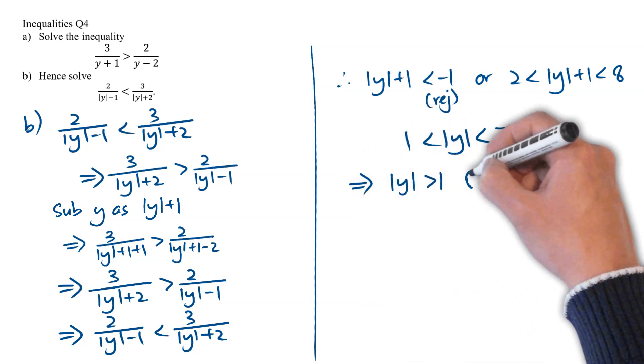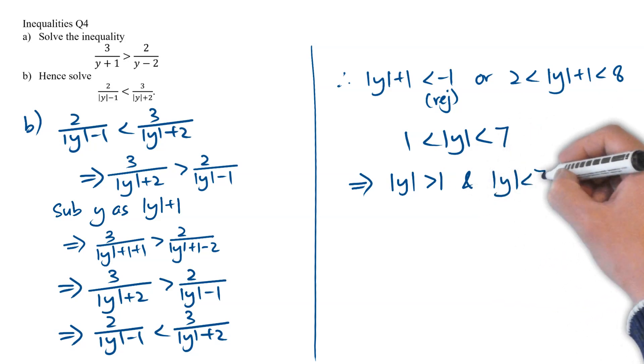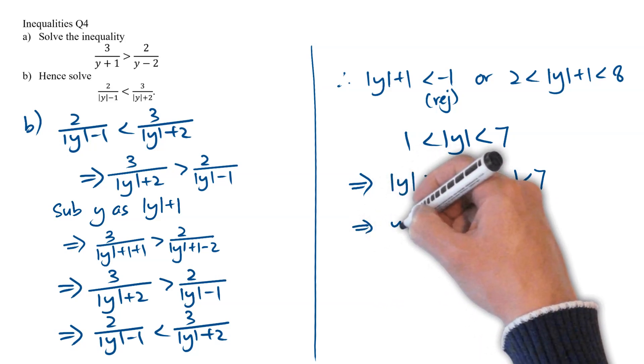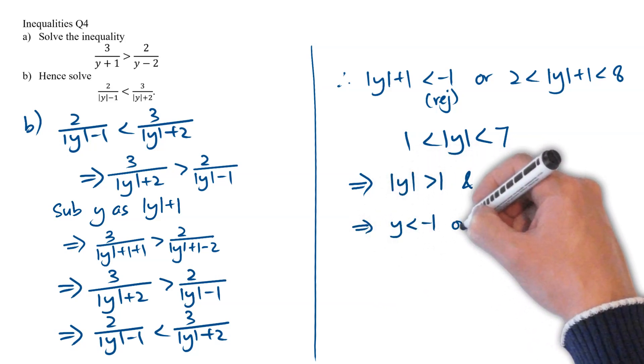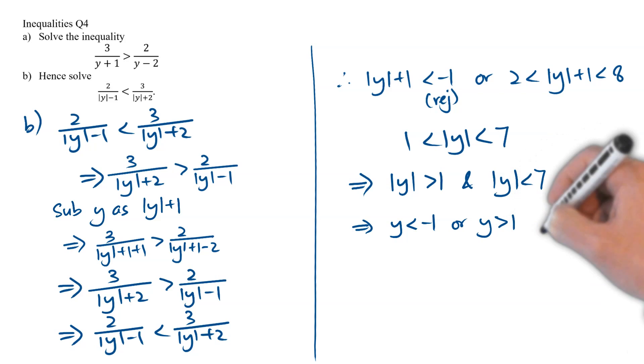First, mod y more than 1, and secondly, mod y less than 7. And if we solve these two inequalities separately, we will end up with y less than negative 1, or y more than 1, and y is between minus 7 to 7.